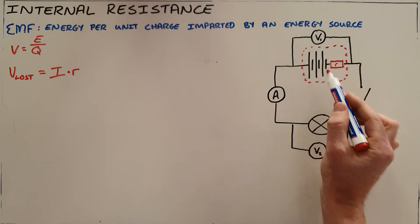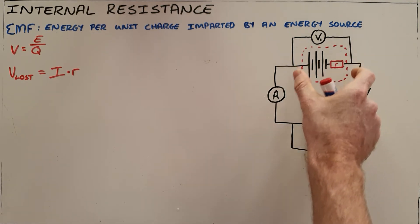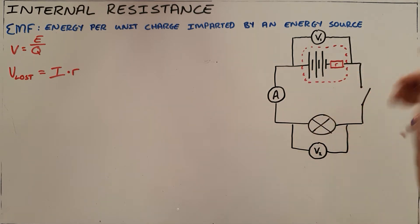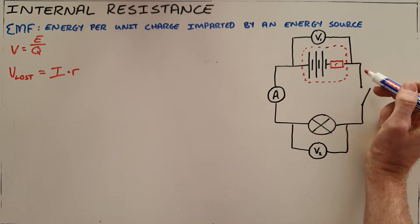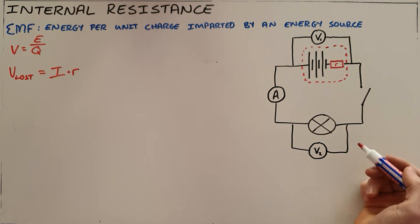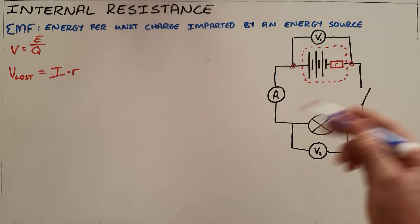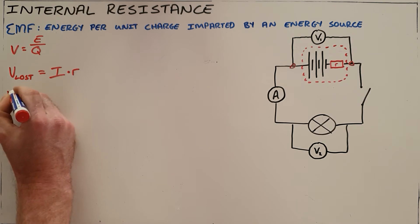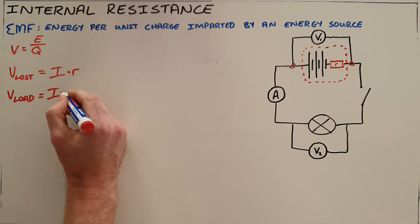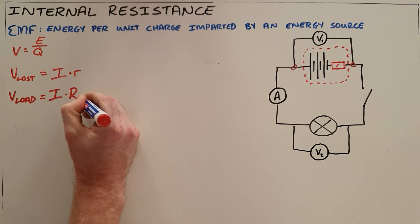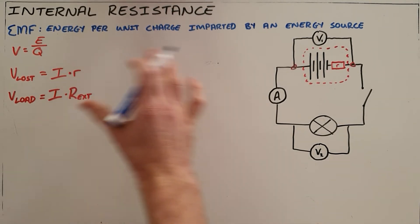What we find now is we actually have almost two circuits. One is the internal circuit — inside the battery — where the current interacts with the resistance within the battery and loses energy. The other is the external circuit, which is essentially what you use the battery for, whether it's a light bulb, heater, or any other type of resistor. We call that the load, and the potential difference used in the external circuit equals the current multiplied by the external resistance, R_external.